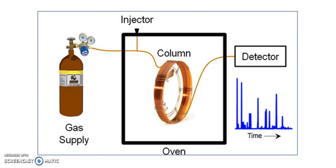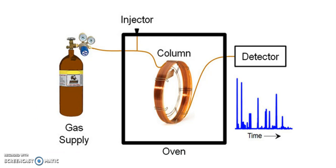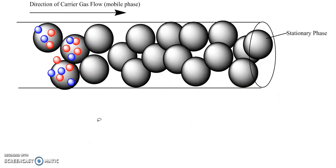You can see it's coiled many times over to maximize the length of column that we can fit in a specific sized oven. If we look at a cutaway and a magnification of what's going on in the column, we've got something like this.